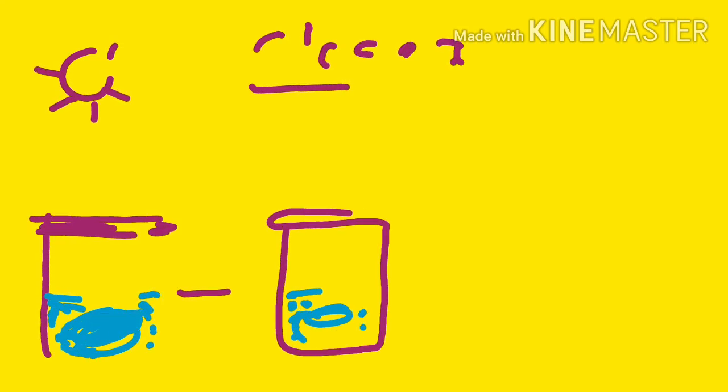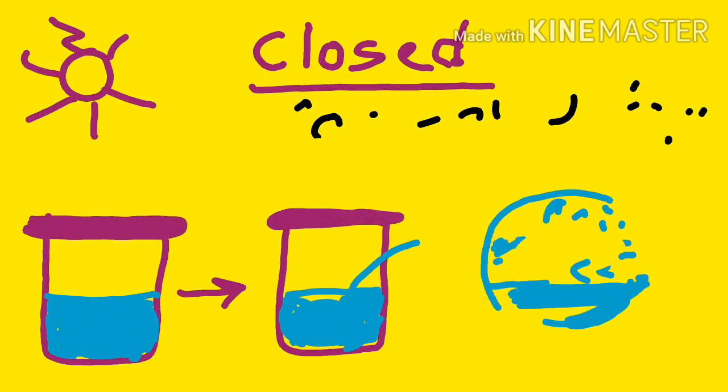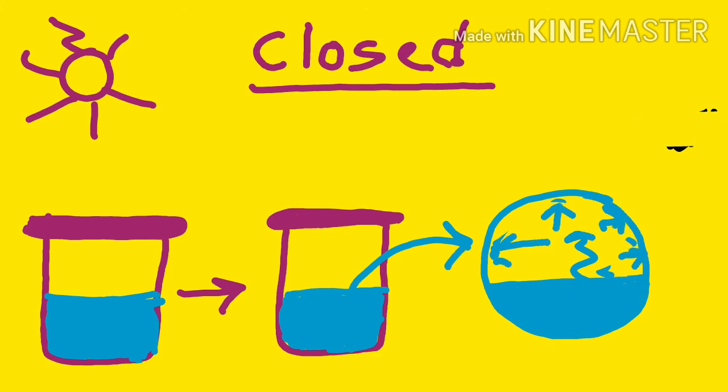So now let's take a look at what will happen if we close the container and repeat the same process. Here the water molecules in this case are continuously evaporating, but they cannot leave the system because they are kept in a closed container. Thus in this case, vapors that are formed exert a pressure on the surface of liquid.